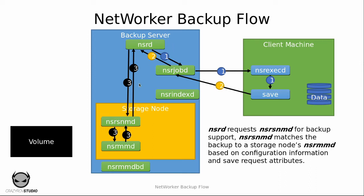Once the NSRD receives the request from the save command for backup support, it arranges for a device to support the backup of this client. For this, it communicates to the NSR SNMD of the respective storage node to arrange for a device. The NSR SNMD in turn selects an NSR MMD — since every NSR MMD is used to manage one respective device — and the NSR MMD starts mounting the volume if it is not yet mounted, then sends information back to NSRD indicating that the target volume is ready. This entire process is indicated by the arrows with the numerical three.